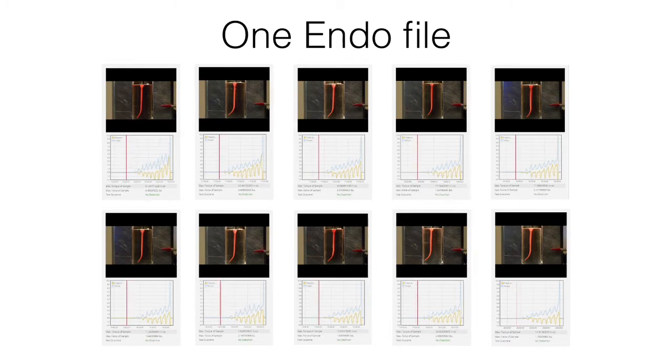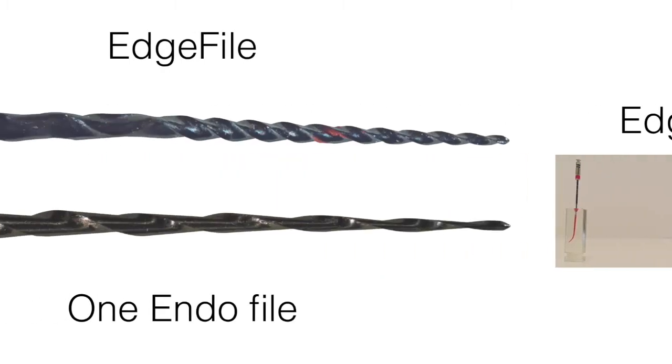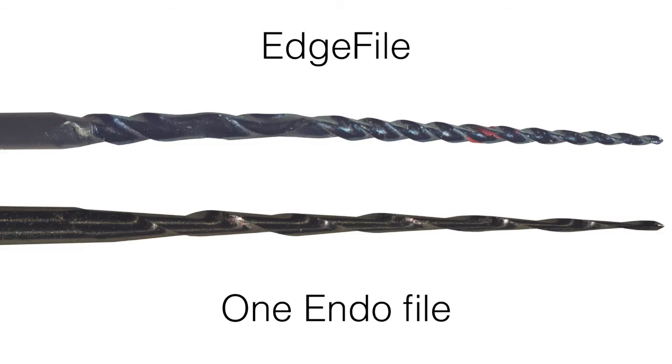So the One Endo makes a pretty compelling argument, especially considering the condition of both files following testing. Remember, there is an inverse relationship between flexibility and resistance to torsional stresses, and that's the reason the Edge file failed.